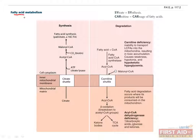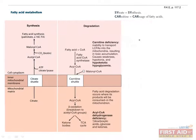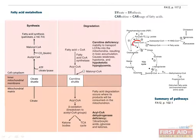The last few topics we'll discuss are fatty acid and cholesterol metabolism. Fatty acid synthesis takes place in the cytoplasm, whereas fatty acid degradation takes place in the mitochondria. Acetyl coenzyme A is the substrate for the synthesis of fatty acids, and it's also used as a starting substrate to make cholesterol and ketone bodies.